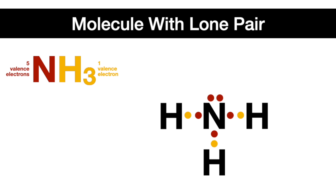You can now see where the bonds will form between the nitrogen and the hydrogens, and that there will be a remaining lone pair on the central atom. Here's the Lewis dot structure and the molecular bond structure. You can draw the lone pair on the molecular bond structure, although you don't have to — just always know it's there.